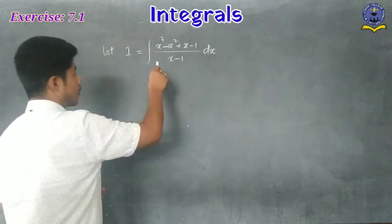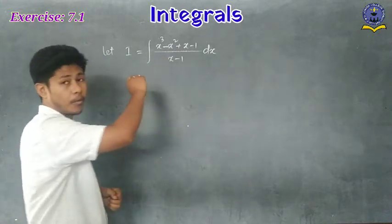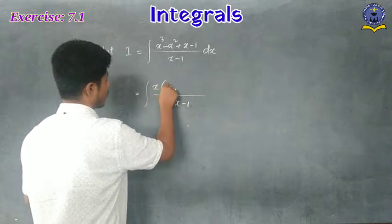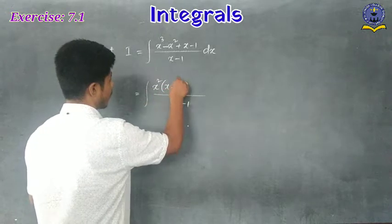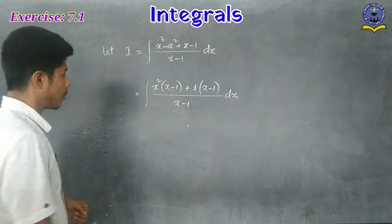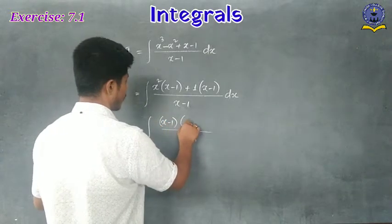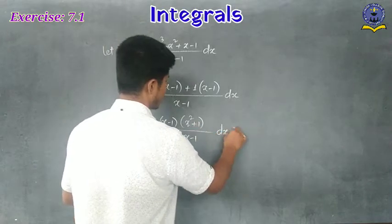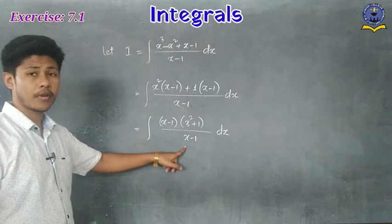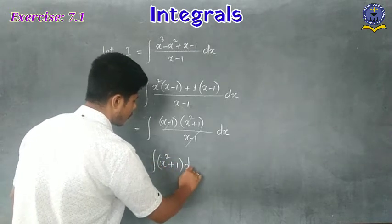We can solve this in two ways. The simple process: in x³ - x², x is common. Take x common from the first two terms — the denominator remains (x - 1). Then take 1 common from the remaining terms, giving (x - 1). So (x - 1) is common overall, leaving (x² + 1).